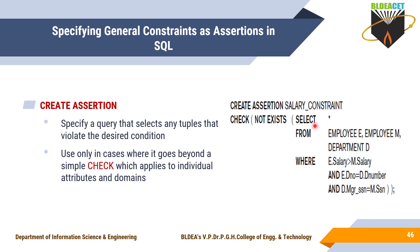Assertions are used to specify constraints, and if a constraint is not followed and errors occur, then you perform some action. In the example: SELECT * FROM EMPLOYEE E, EMPLOYEE M, DEPARTMENT D WHERE E.SALARY > M.SALARY and the tables are related using the conditions E.DNO = D.DNUMBER and D.MANAGER_SSN = M.SSN. This query checks that an employee's salary is not greater than the manager's salary. If such a tuple exists, NOT EXISTS returns false; if it does not exist, NOT EXISTS returns true.